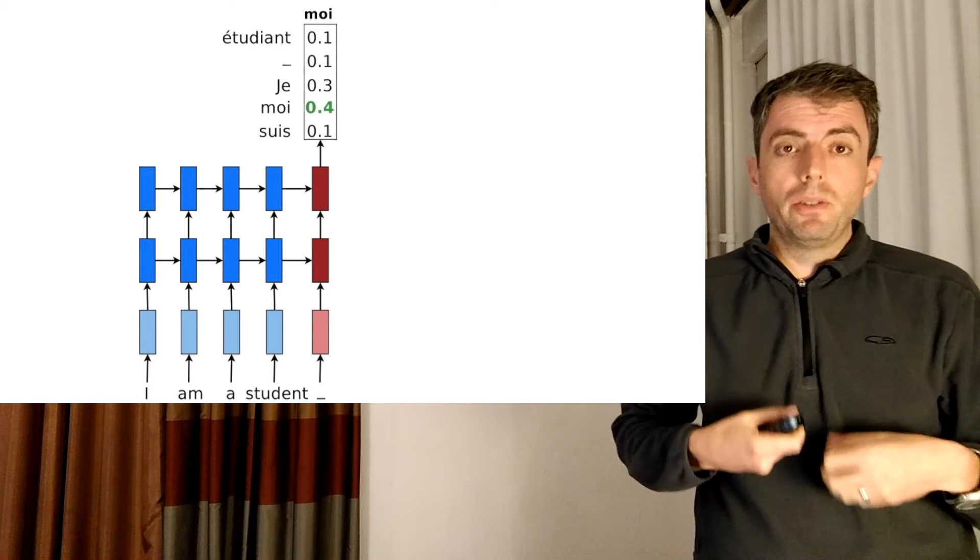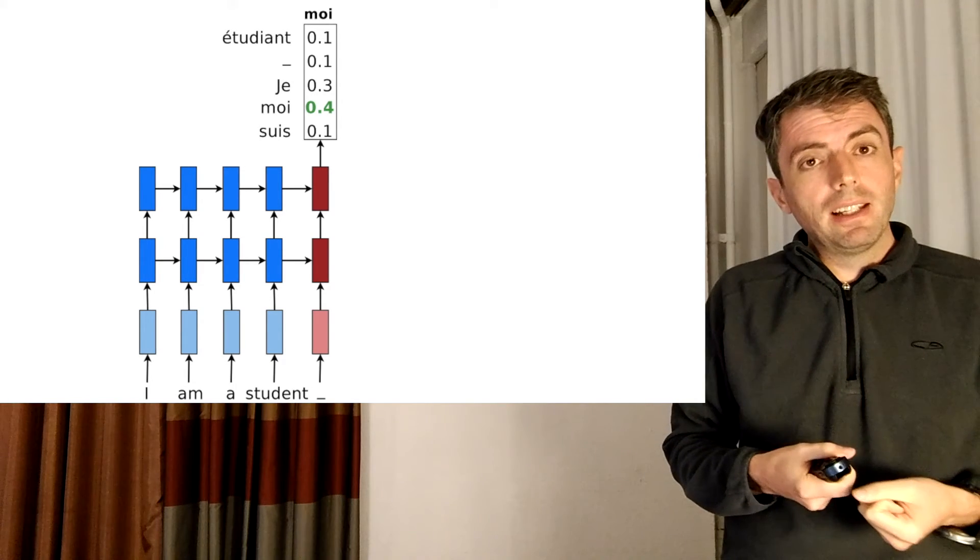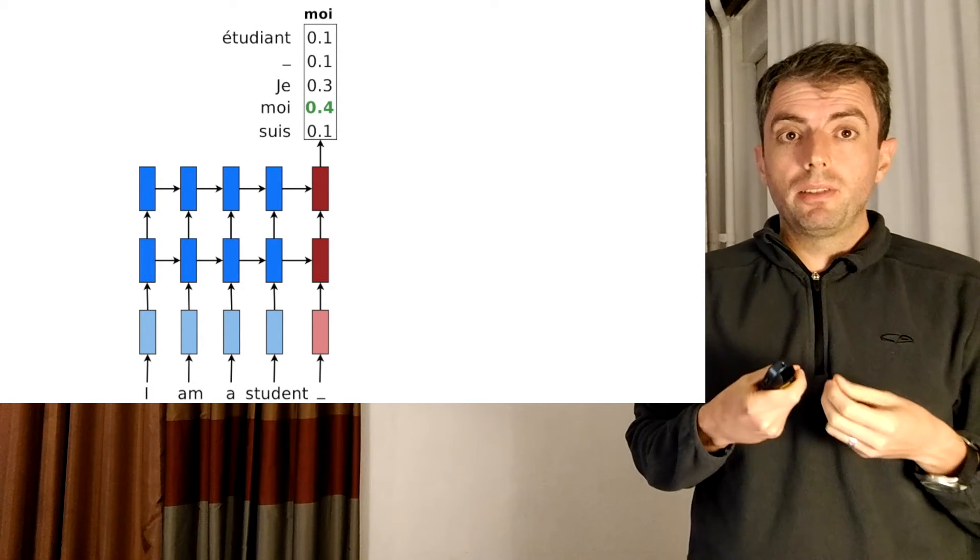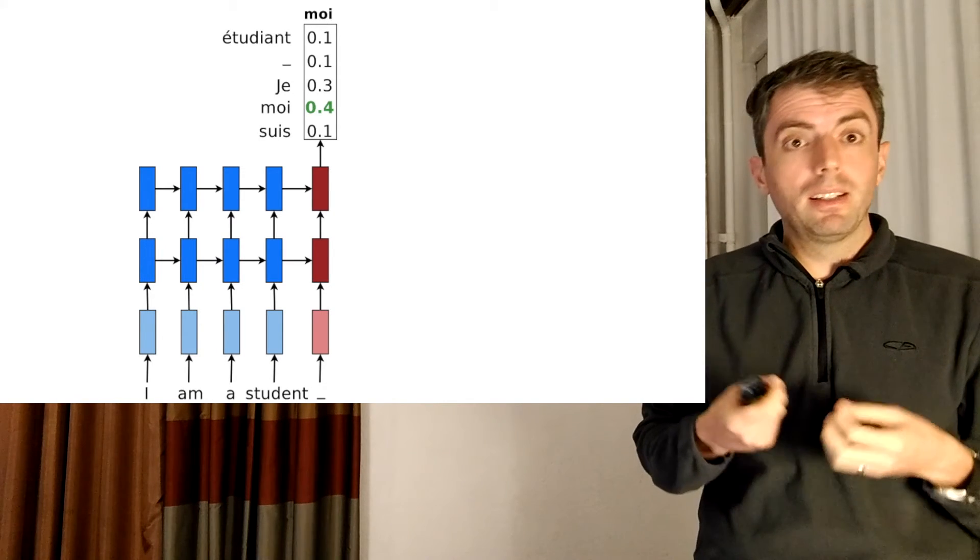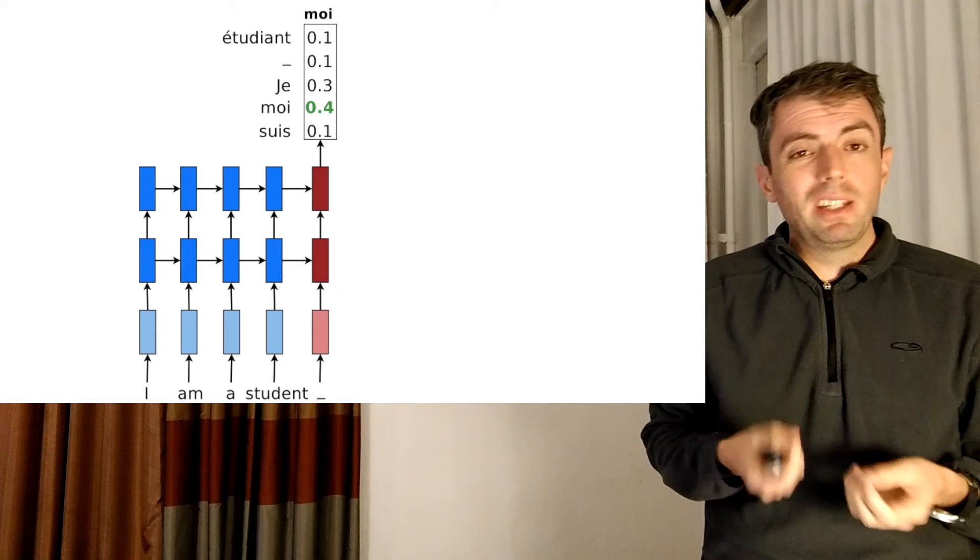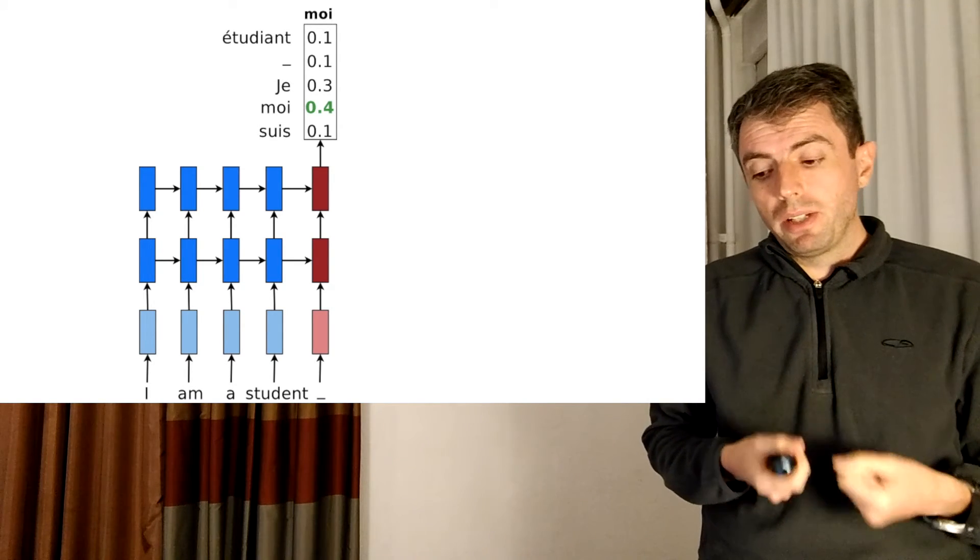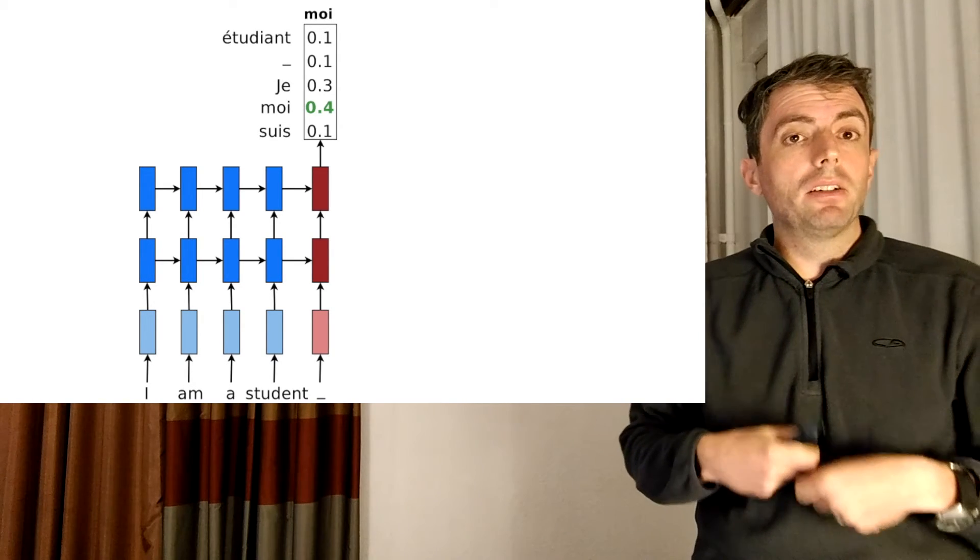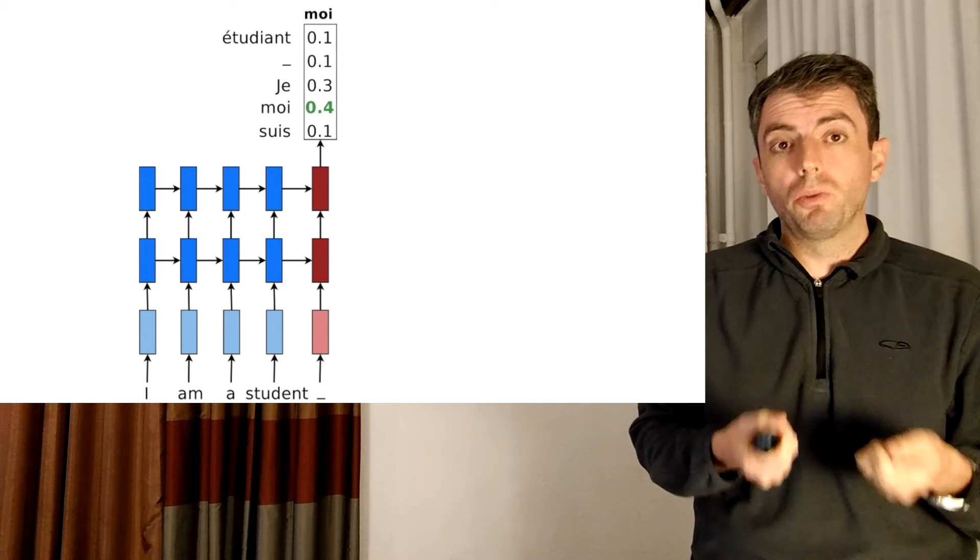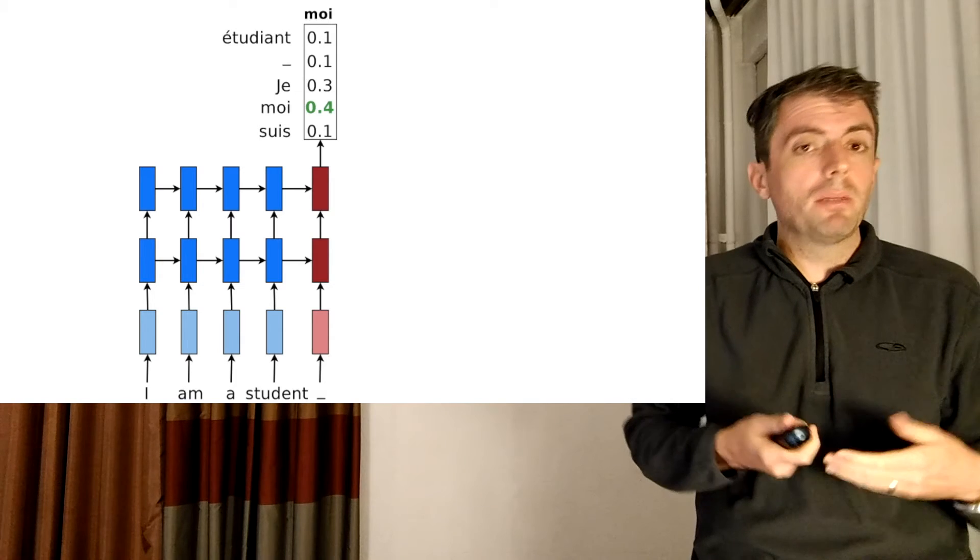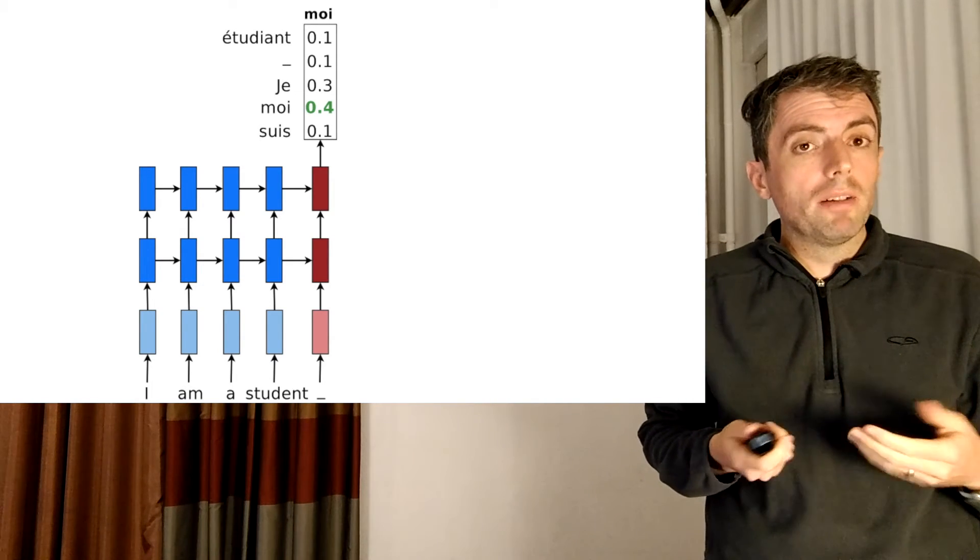And then you need to make a prediction. So given the hidden layer of the first word of the target sentence, in this case, French, you then need to pick one of the words. So here, you're going to take the hidden layer and put it through something like a softmax to choose one of the French words to output. In this case, maybe you don't get it right. Maybe you predict moi instead of je, accusative versus nominative.